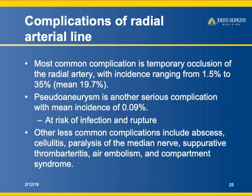The most common complication of radial arterial line placement is temporary occlusion of the radial artery — around 20% of patients, so it's not uncommon. Pseudoaneurysm occurs in under 0.1%. Other complications include abscess, cellulitis, nerve paralysis, suppurative thrombophlebitis, air embolism, and compartment syndrome — all things to be aware of.